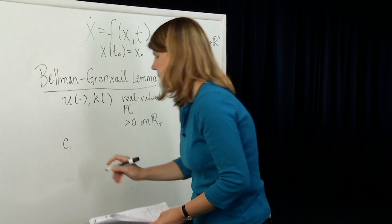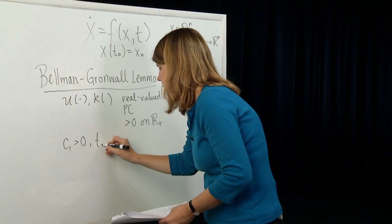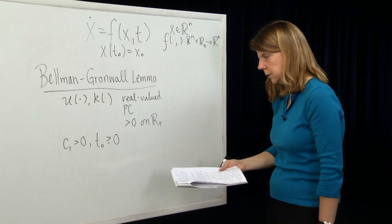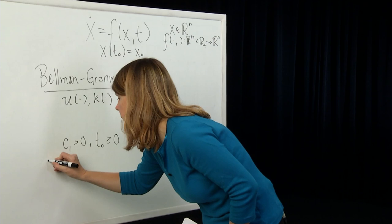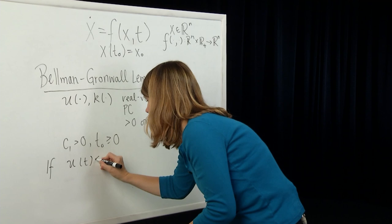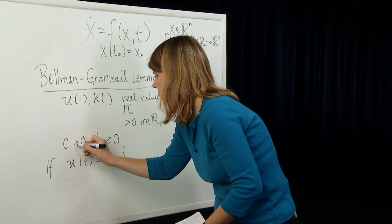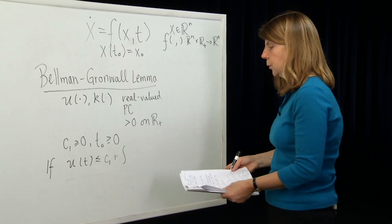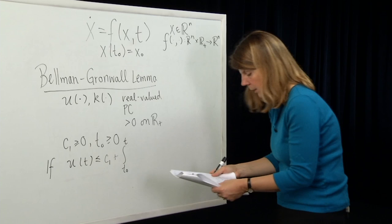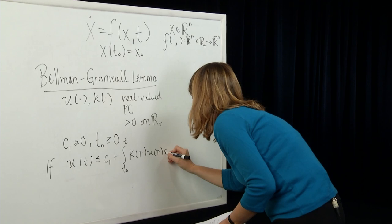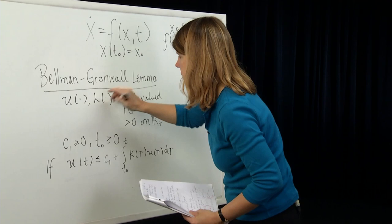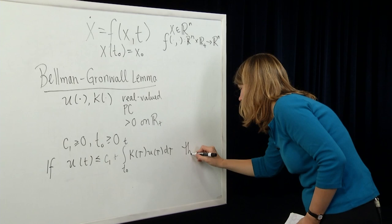We also have some constant c1 which is greater than or equal to zero, and some initial time t0, where we assume t is greater than or equal to zero. Then the Bellman-Gronwall Lemma states the following: if u of t is less than or equal to c1 plus the integral from t0 to t of k(τ) u(τ) dτ — if you can establish this bound on u — then the Bellman-Gronwall Lemma states that u(t) is bounded to be less than or equal to c1 times e to the integral from t0 to t of k(τ) dτ.